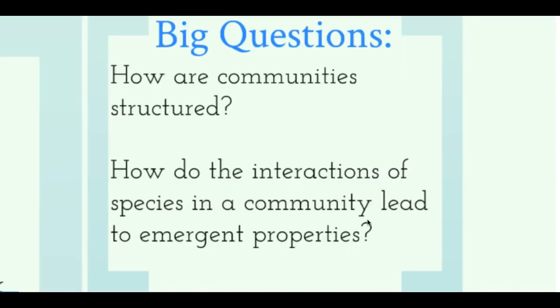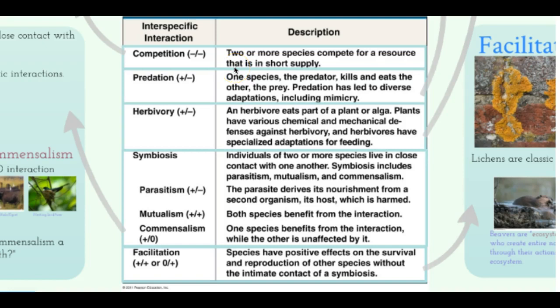A big question is: how do community structures and interactions of species lead to emergent properties? Notice the word 'interspecific' — meaning interactions between different species, as opposed to interactions within one species. The different types of interactions we'll cover include competition, where both species compete for the same resources and both get a negative effect. Without competition there's an abundant amount of resources, but when two species share an area, competition reduces both populations.